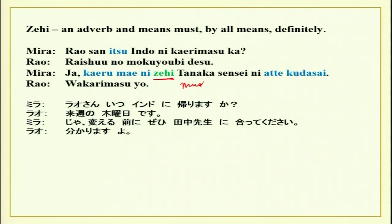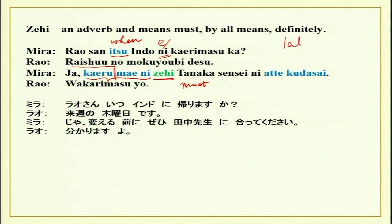Zehi means must. Rao-san, itsu indo ni kaerimasu ka? — when are you returning to India? Raishu no mokuyobi desu — next week Thursday. Jaa, kaeru mae ni zehi Tanaka sensei ni atte kudasai — before you return, please make sure to meet Tanaka sensei. Remember mae ni takes the plain form of the verb. Taberu mae ni zehi te wo aratte kudasai. Neru mae ni denki wo keshite kudasai — before sleeping, switch off the lights. Uchi wo deru mae ni denwa wo kakete kudasai.